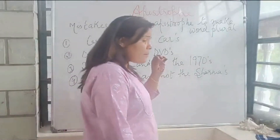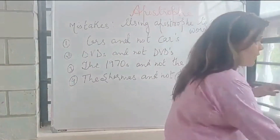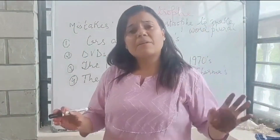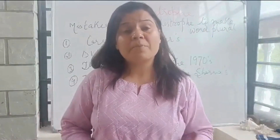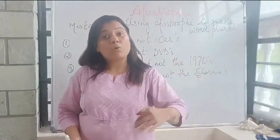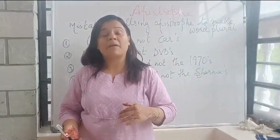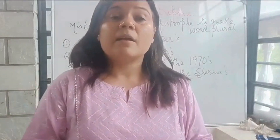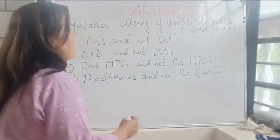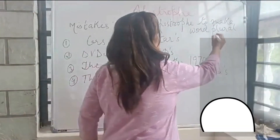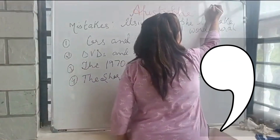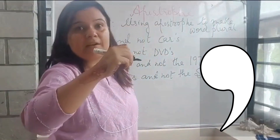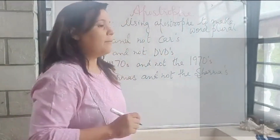First, the basic or the golden rule to understand an apostrophe is: when we talk about ownership or possession, then we use an apostrophe. The apostrophe is a symbol — it looks like a comma, but not on the bottom; it sits on the top.